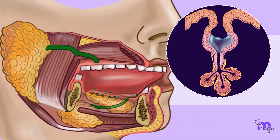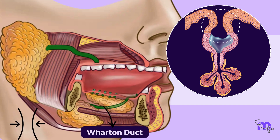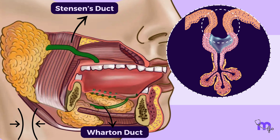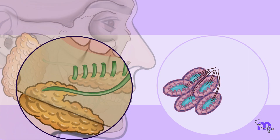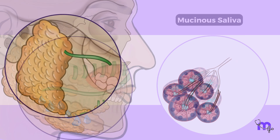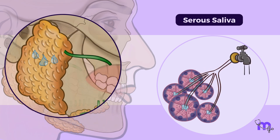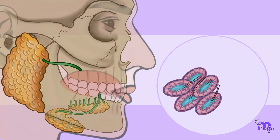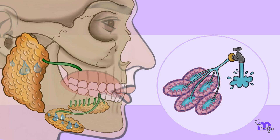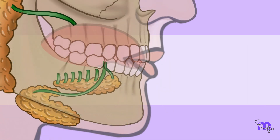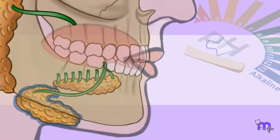Another factor is that the opening of Wharton's duct is narrower than that of Stenson's duct, creating a potential bottleneck for the saliva. Additionally, the submandibular gland produces mainly mucinous saliva, which is thicker than the serous saliva from the parotid gland.